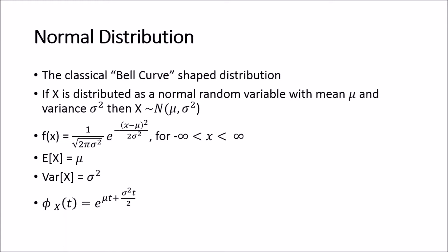The normal distribution is this classical bell curve shape distribution. We say if X is distributed as a normal random variable with a mean of mu and variance sigma squared, then we write it as X distributed normal with mean mu and variance sigma squared. We quote this as variance — sometimes people write it as sigma, but you should really be writing it as sigma squared.